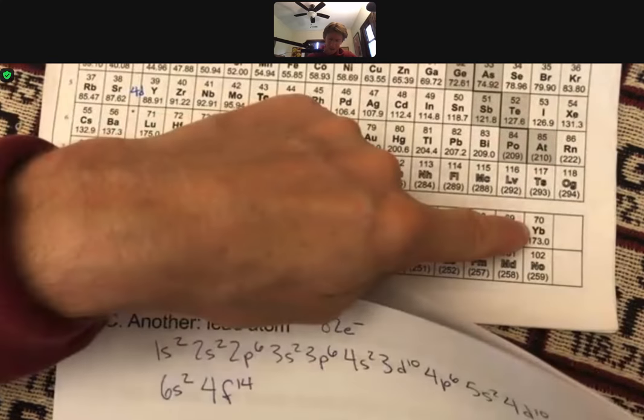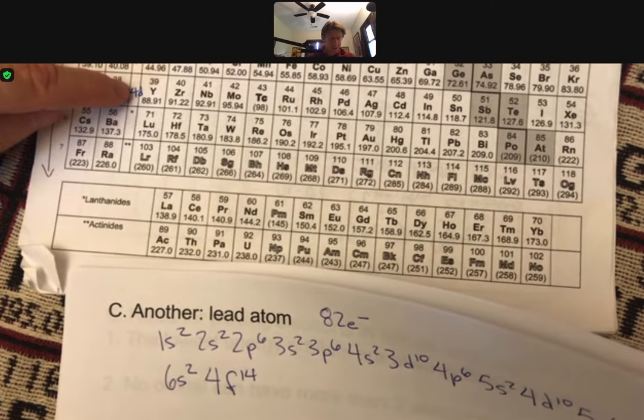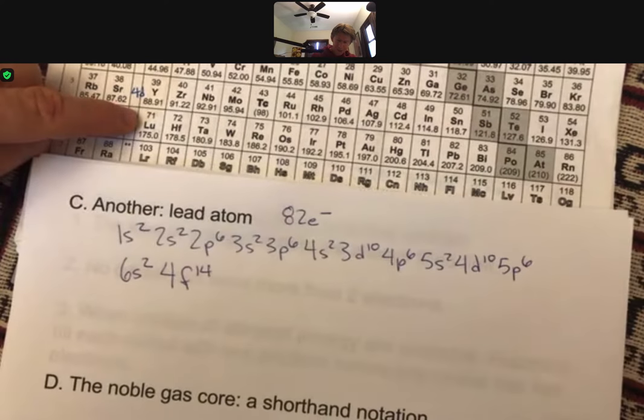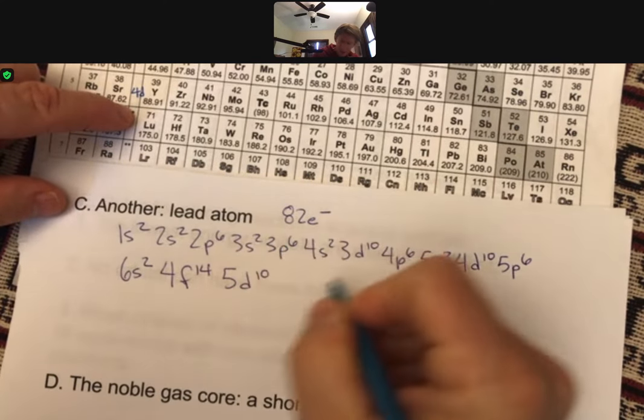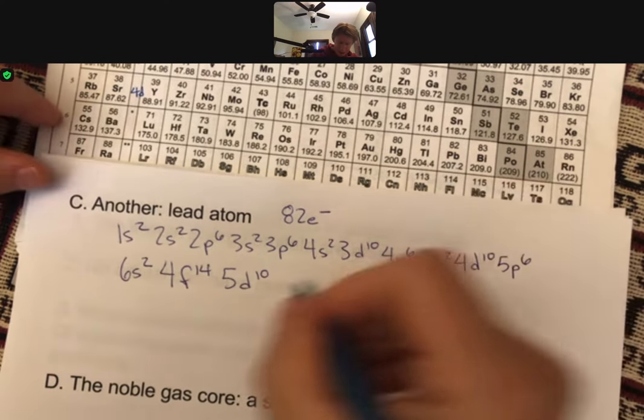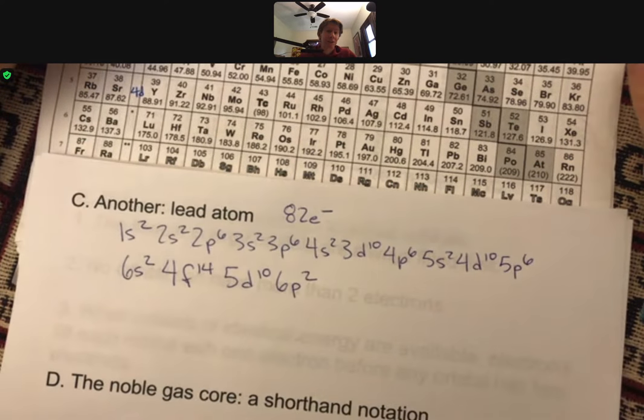Then you come back up after 70 to element number 71. We've done 4d. This is 5d. 5d, we do make it all the way over to 5d10. And then this is going to be the 6p area, 6p2. And that is the electron configuration of lead. It is long, but you have to know how to do it.